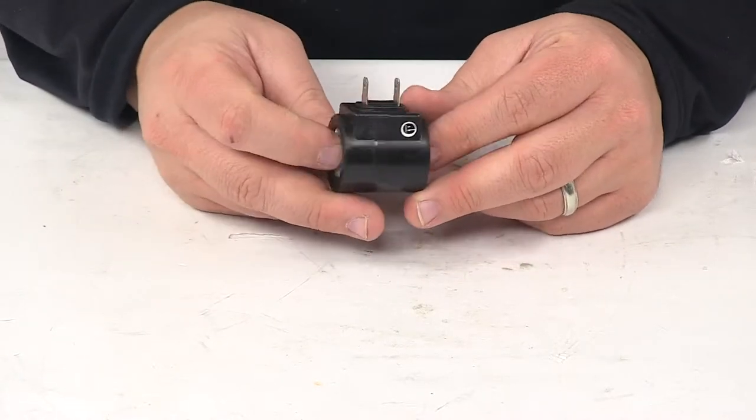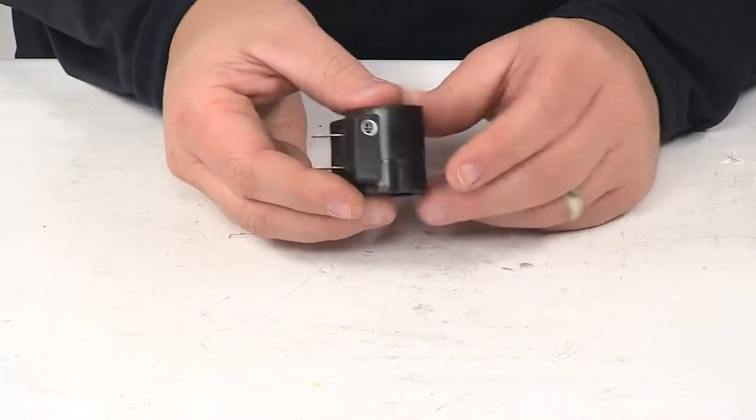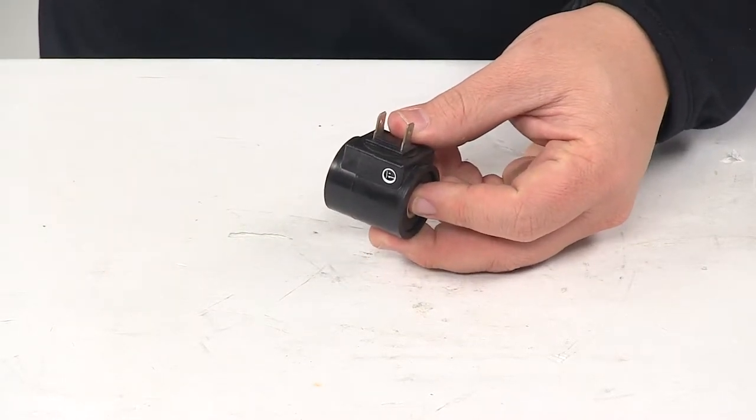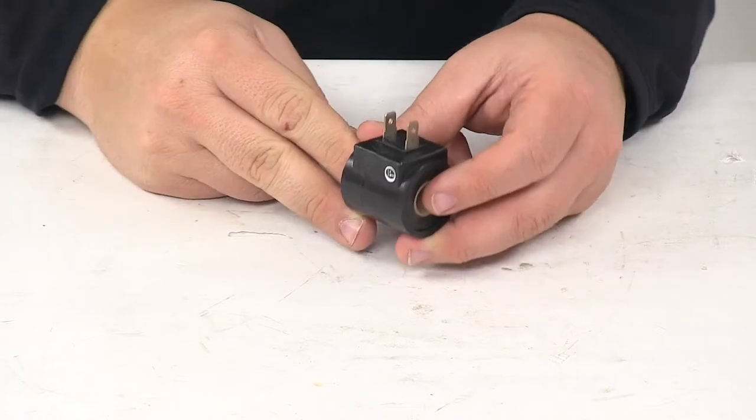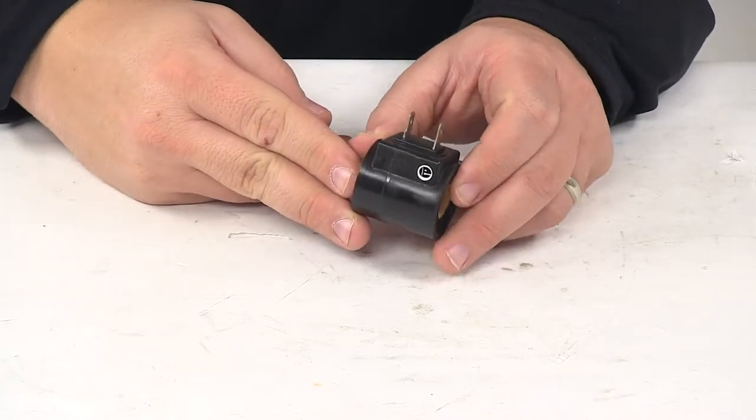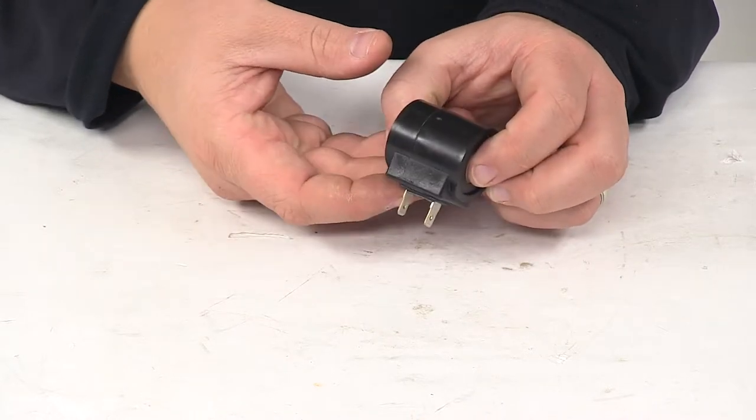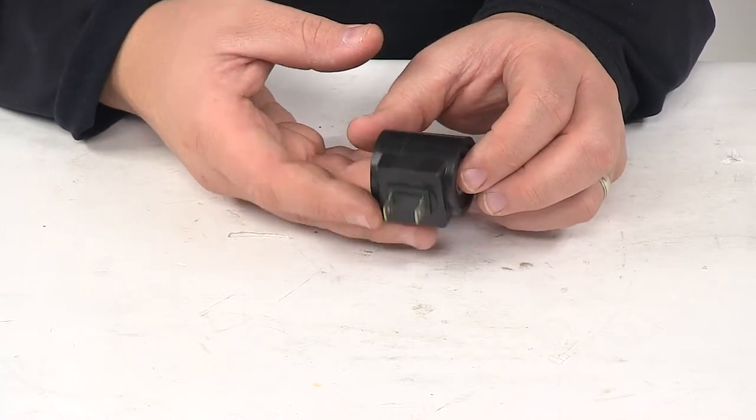Today we're taking a look at the replacement coil with spade terminals. This replaces the coil with spade terminals for Fisher and Western snow plows. It replaces Fisher part number 7639 and replaces Western part number 49230.